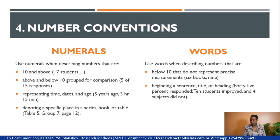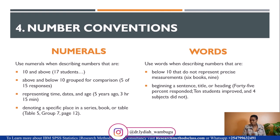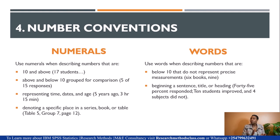Use words when describing numbers below 10 that are not representing precise measurements; for example, 'seven students,' 'six books,' 'nine pencils.' Also use words when the number appears at the beginning of a sentence, title, or heading. For instance, if a sentence begins with '45%,' you cannot start with the numeral 45 — you write 'Forty-five percent responded' and then continue.